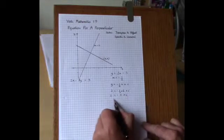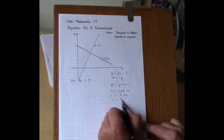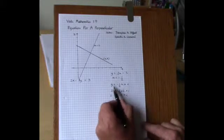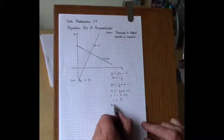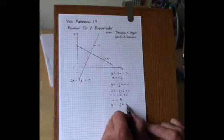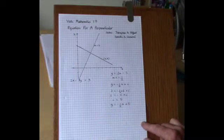To find that c equals 5. And then we substitute this back into our temporary equation here to find y equals minus 1 half x plus 5. Well that's the conventional method.